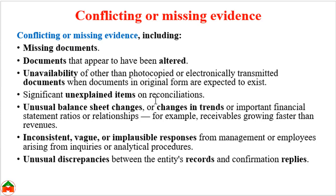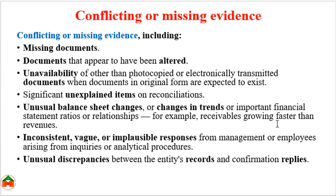Further examples include significant unexplained items on reconciliation statements — if there is no clear explanation for any significant item, that indicates the possibility of fraud. Also, unusual balance sheet changes, changes in trends, or changes in important financial statement ratios or relationships — for example, receivables growing faster than revenues — can indicate the possibility of fraud.